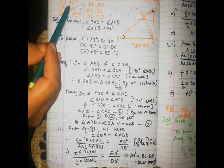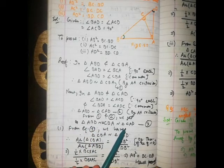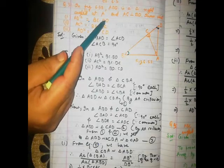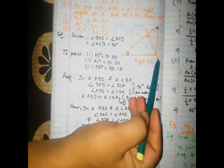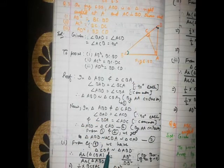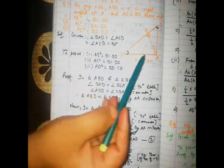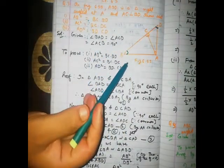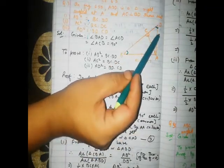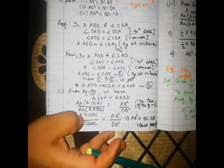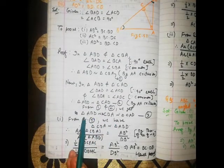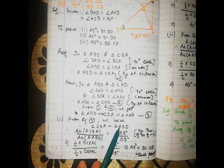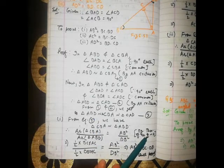Now we have to prove the three parts. To prove Part 1, we take the whole triangle ABD and triangle CBA. To prove Part 2, we take the two interior triangles CBA and CAB. To prove Part 3, we take the whole triangle ABD and the upper interior triangle CAB. From equation 3, triangle ABD is similar to triangle CBA, and we apply the theorem of areas of similar triangles.